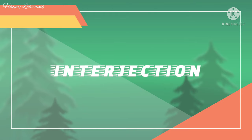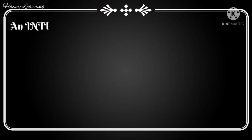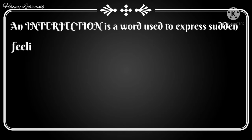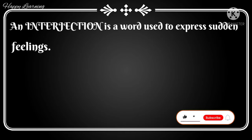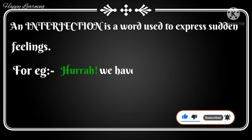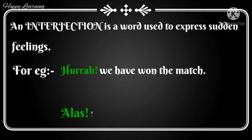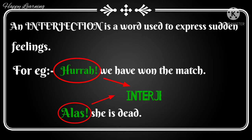Lastly, we have the interjection. An interjection is a word used to express sudden feelings. For example: 'Hurray! We have won the match' and 'Alas! She is dead.' The words in green — 'hurray' and 'alas' — denote sudden expression of feelings, making them interjections. This was a brief discussion on the parts of speech.